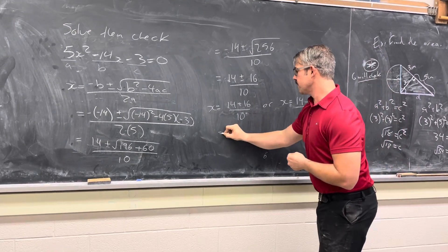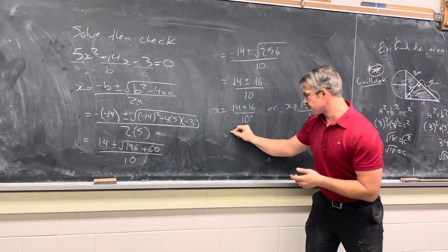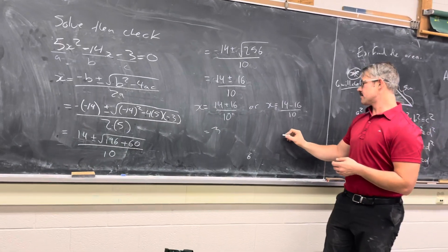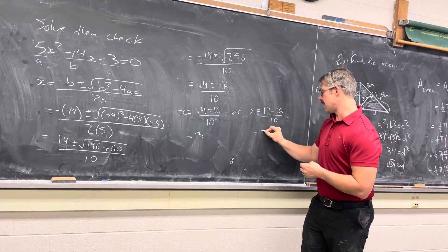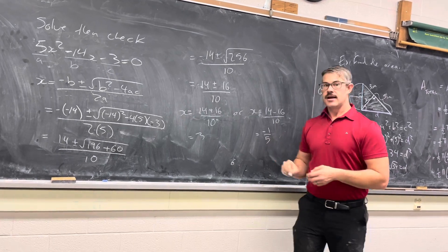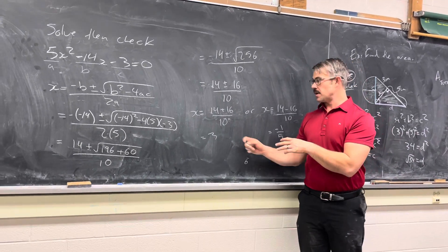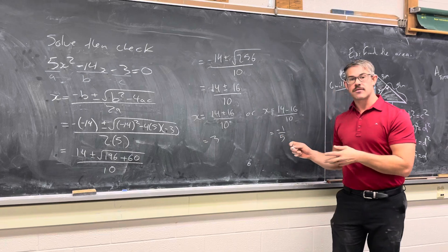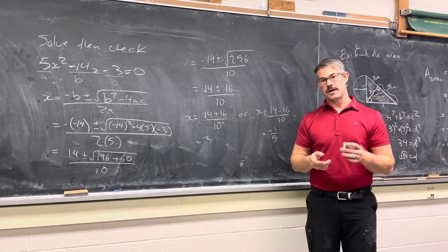This is important. 14 plus 16 over 10 is 30 over 10 or 3. And 14 minus 16 over 10 is negative 2 over 10 or negative 1/5. And so those are the two roots. We have a root at x equals 3 and we have a root at x equals negative 1/5.